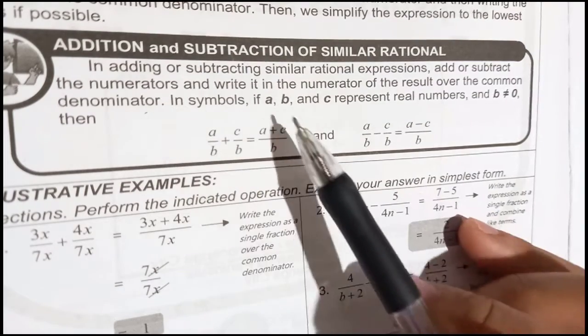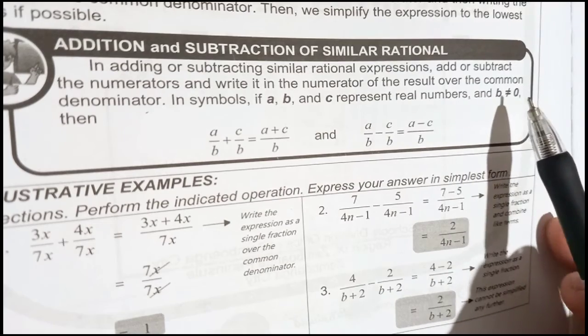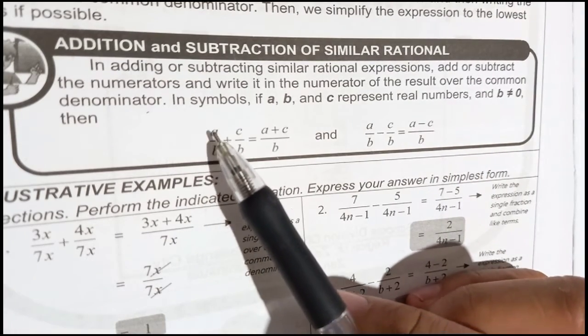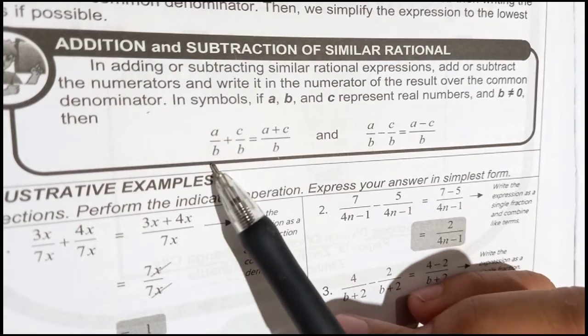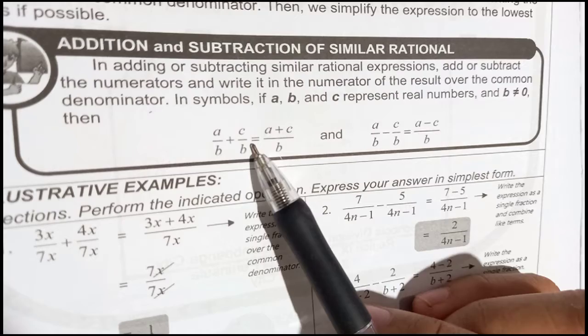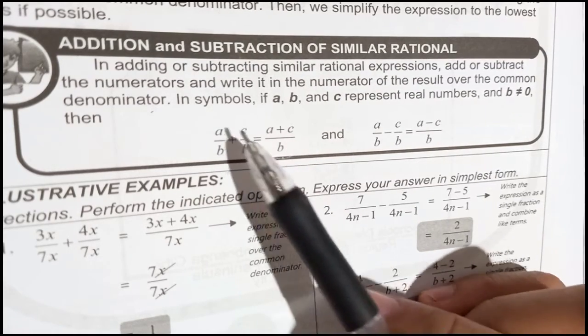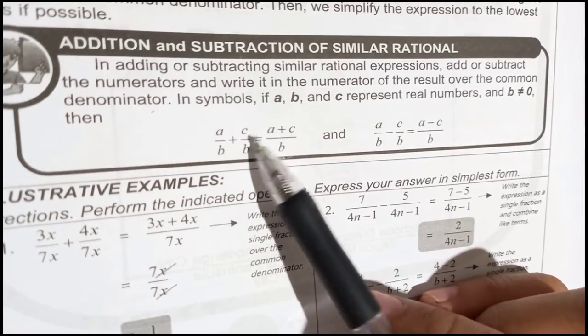It means if A, B, and C represent real numbers and B must not be equal to 0, then in this example, A over B plus C over B, as obviously your denominator B is common. So therefore, copy B and then simply add A plus C. So therefore, A plus C over B.